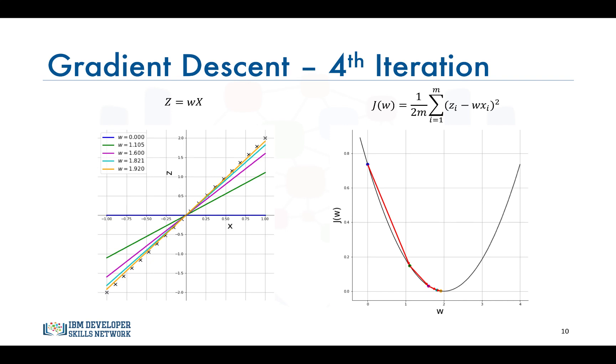With each iteration the weight is updated in a way that's proportional to the negative of the gradient of the function at the current point. Therefore if you initialize the weight to a value that's to the right of the minimum, then the positive gradient will result in w moving to the left towards the minimum.